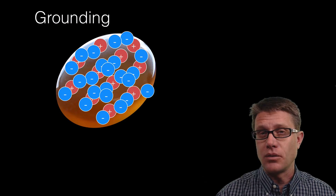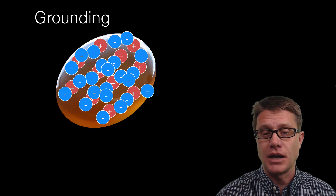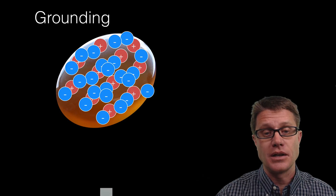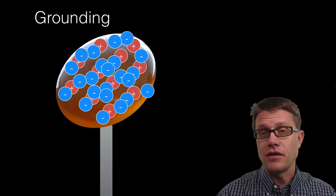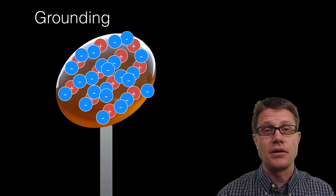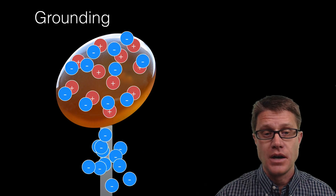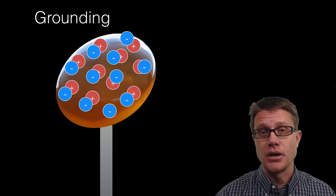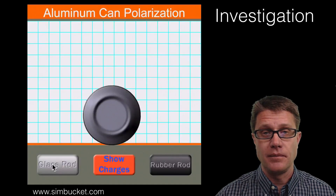How can we get rid of some of that charge? We have an excess amount of negative charge. If we connect a wire to it and connect that to the earth, we are going to have movement of those electrons to an area where there are fewer electrons. And so what we are going to be left with is a net charge of zero in the object again. If we want to add charge to it, we are going to have to charge it up again.